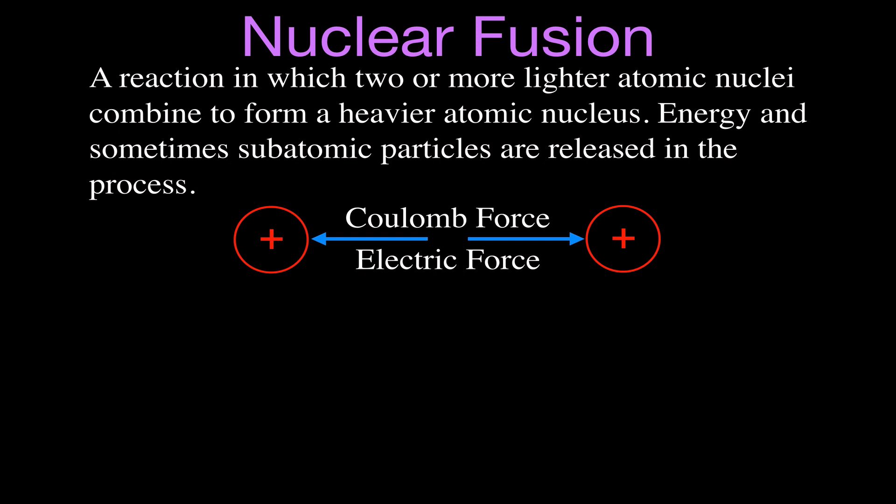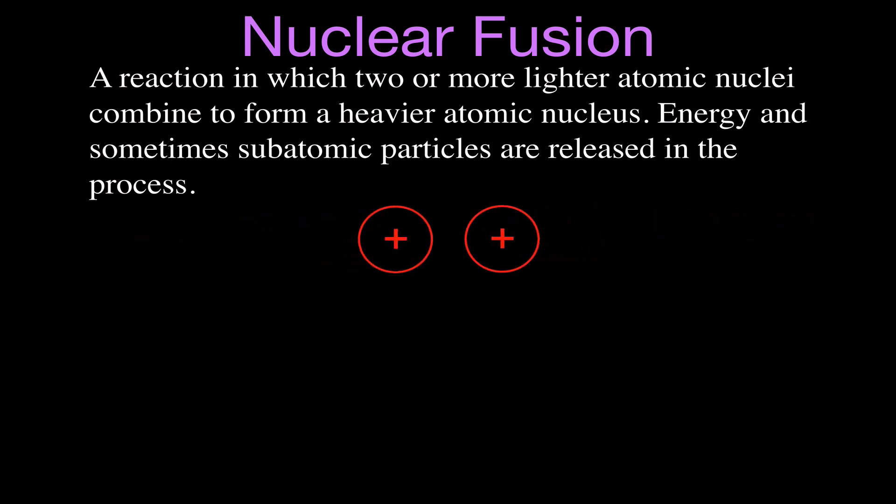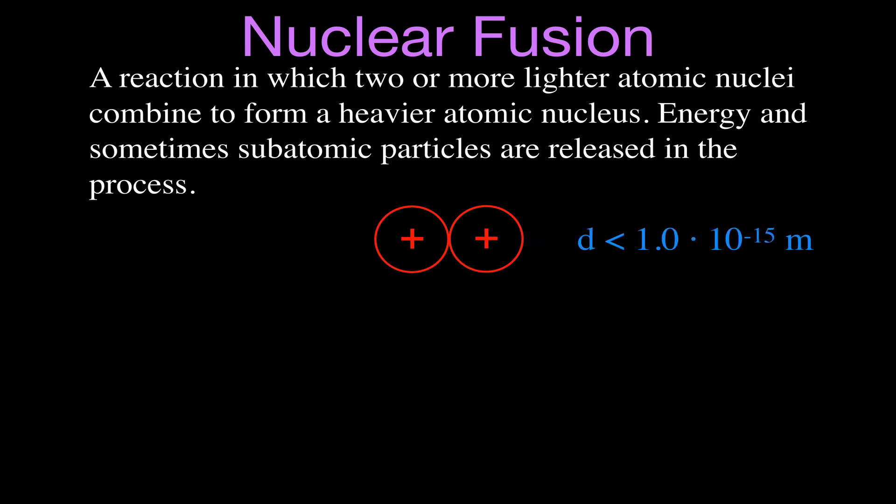We want to fuse those two protons together, which means we need to get them really close. To do that, there must be a very high temperature and also a lot of pressure — conditions that occur on stars like our sun. We have to get them to a distance less than 1.0 × 10⁻¹⁵ meters. When we bring them that close, another force takes over: the strong nuclear force. It's called the strong nuclear force because it's quite strong, acts in the nucleus, and is stronger than the electric repulsive force between the two like-charged particles.